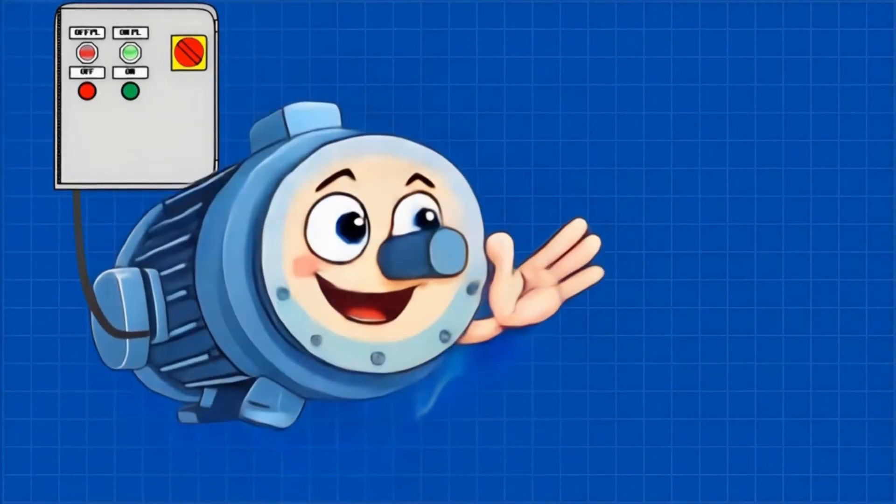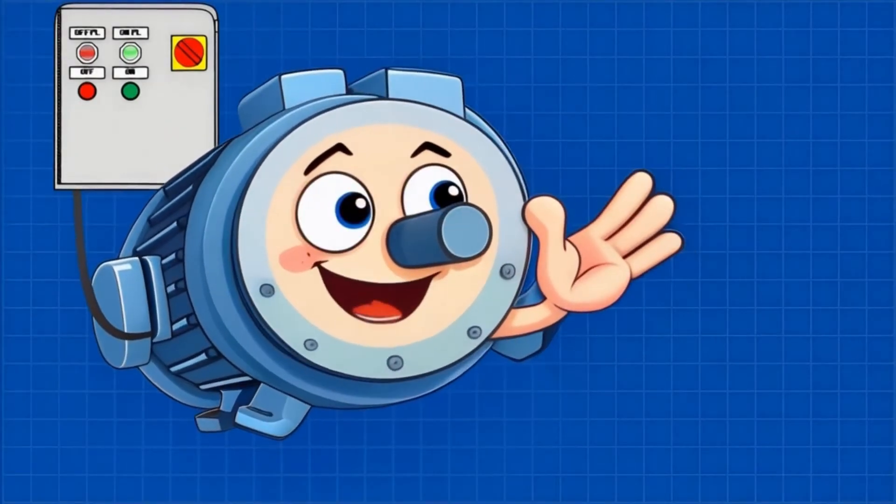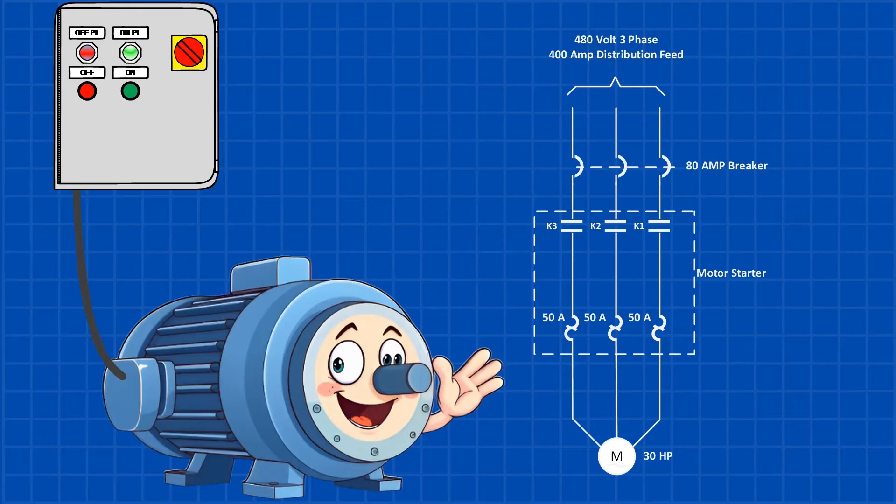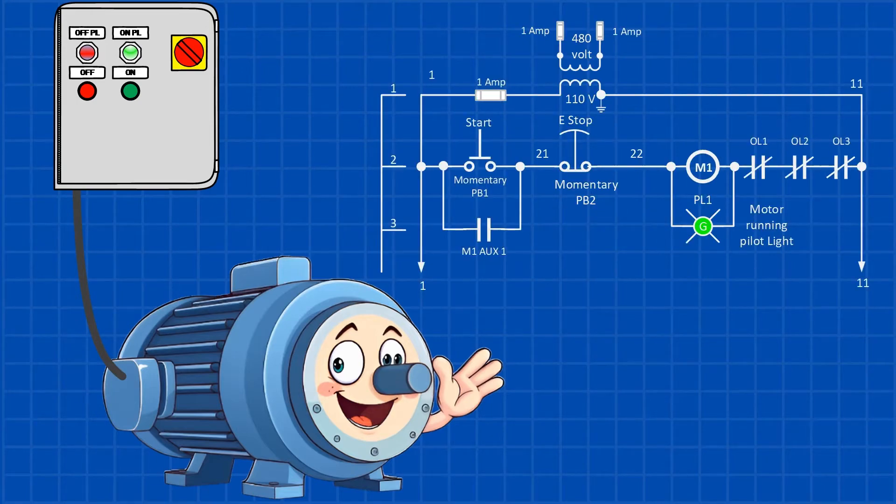In this video, we'll explore the essential components involved in controlling a 30-horsepower, 22 kW, three-phase motor. We'll break it down into two main sections: the 480-volt power side and the 110-volt AC control side. You'll learn about main breakers, motor starters, overload protection, latching circuits, and we'll walk through both the electrical and wiring diagrams.